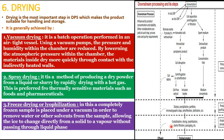Spray drying is a method of producing a dry powder from a liquid or slurry by rapidly drying with hot gas. It is specially used for sensitive materials such as food products and pharmaceuticals. Freeze drying or lyophilization involves placing a completely frozen sample under a vacuum to remove water or other solvents, allowing them to change directly from solid to vapor — a process called sublimation — without passing through the liquid phase.